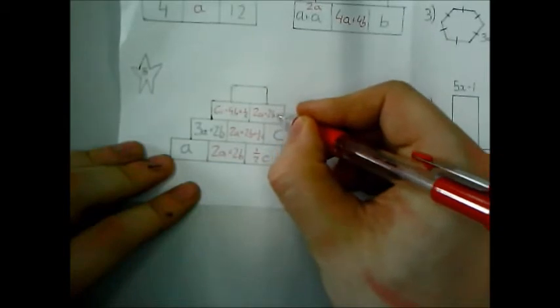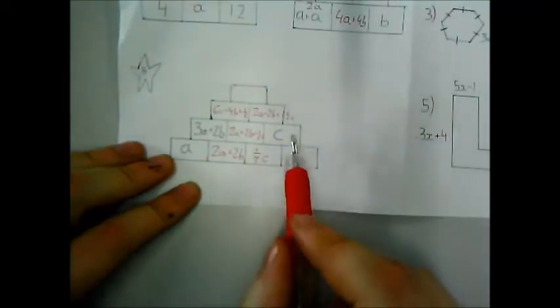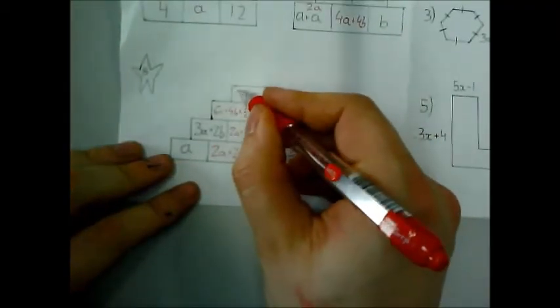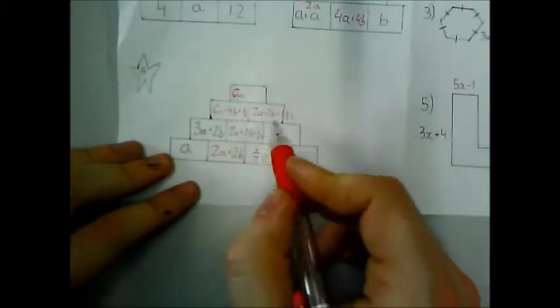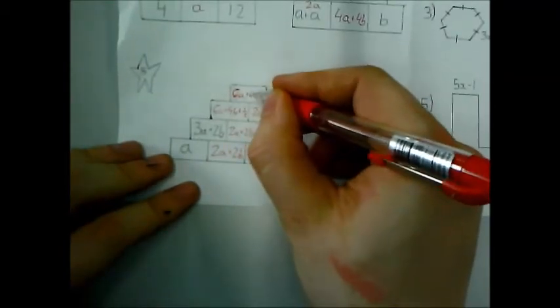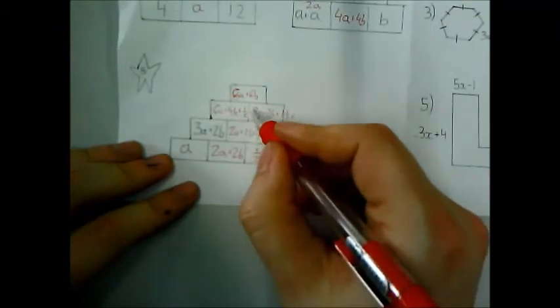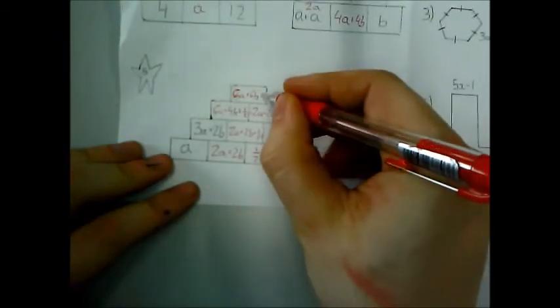And then here, I've got 2a plus 2b plus half c plus c. So that's going to give me 2a plus 2b plus 1 and a half c. And now finally, if I add up all these together, 6a plus 2a is 8a. 4b plus 2b is positive 6b. And a half c plus 1 and a half c is 2c. And that is finished for question 5.